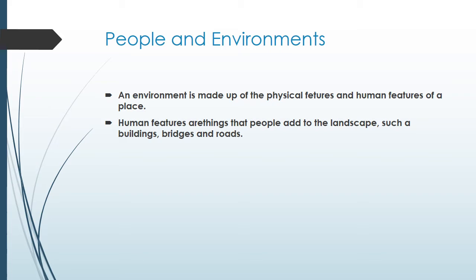People and environments. An environment is made up of the physical features and human features of a place. Human features are things that people add to landscapes such as buildings, bridges and roads. Communities are affected by their environment. Some people came into an environment and they added buildings, roads — how to get from one part to another part. So this is the human part — how we change the environment. It's important to remember what is the environment and what is the human feature.